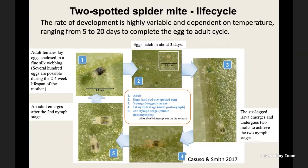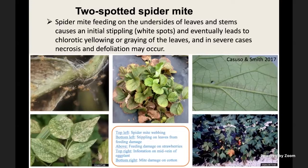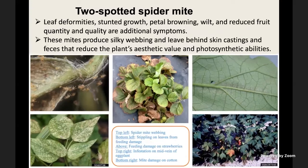The whole egg-to-adult process can be completed within 5 to 20 days depending on temperature and other conditions. Spider mites primarily feed on the undersides of leaves and sometimes stems, causing initial stippling shown as white spots, and eventually leading to chlorotic yellowing — sometimes called bronzing or graying. In severe cases, necrosis and defoliation can occur when populations are not controlled. Leaf deformities, stunted growth, petal browning, and reduced fruit quantity and quality are outcomes. These mites produce silky webbing and leave behind skin castings and feces that reduce plant photosynthesis.